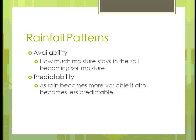How much moisture stays in the soil becomes the moisture used by plants, as roots go down to where the water is held. Predictability is an important issue — as rainfall becomes more variable, it becomes less predictable. In wet-dry cycle areas, the seasons are consistent and easy to predict. But in many areas, rainfall is becoming less and less predictable, so you might not get enough rain or you might get too much during certain periods.